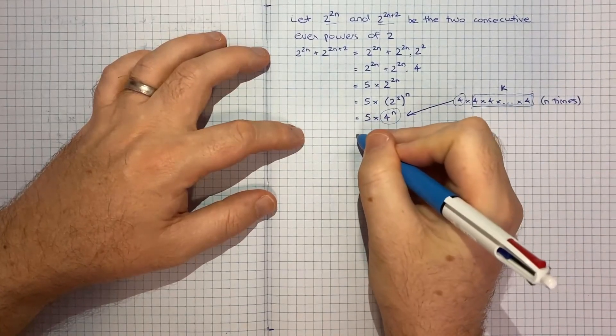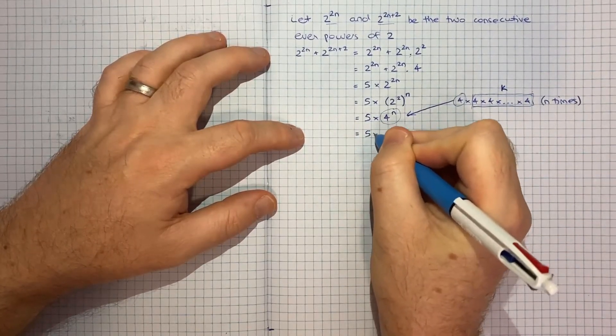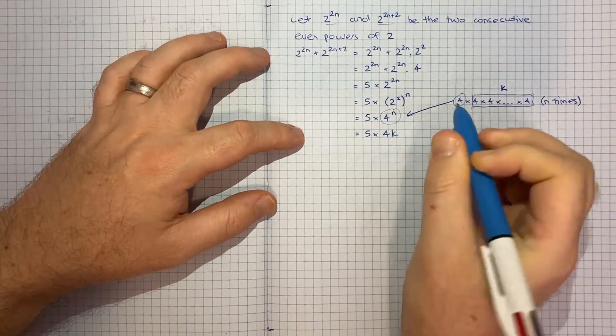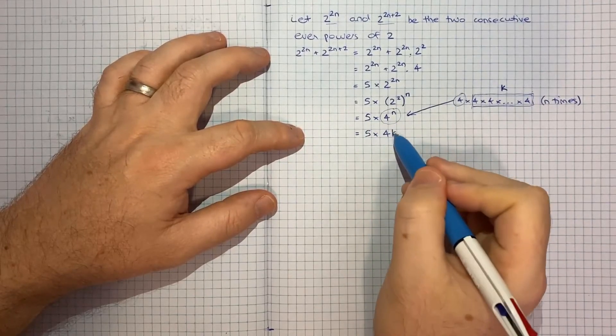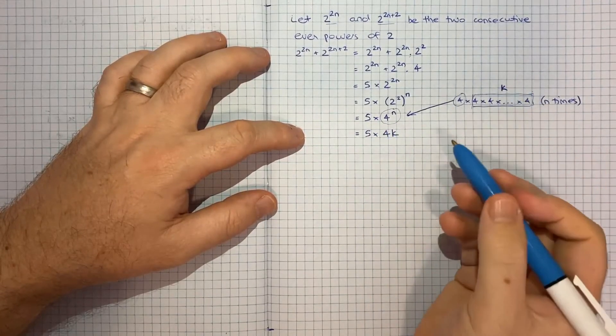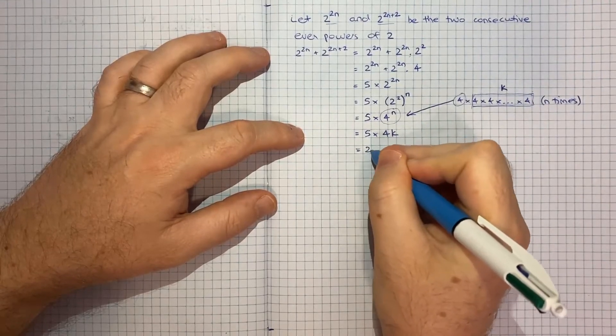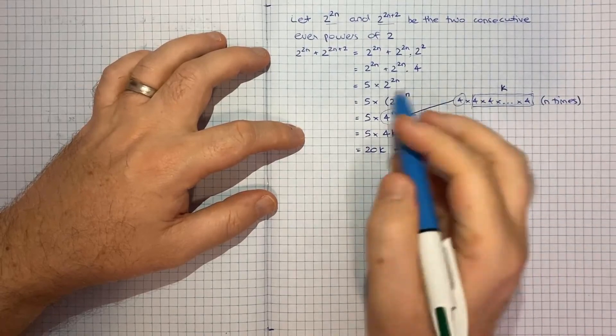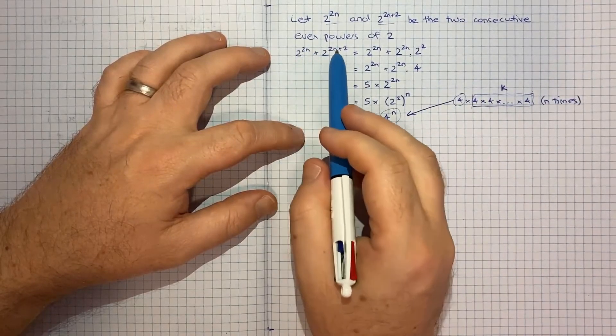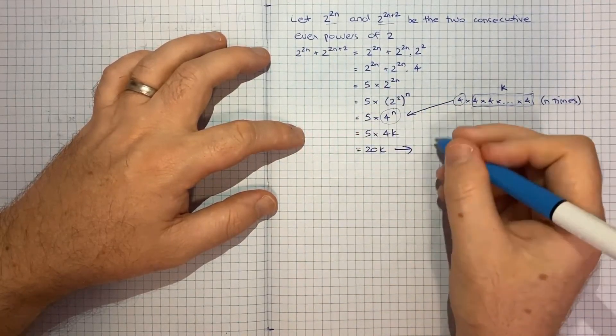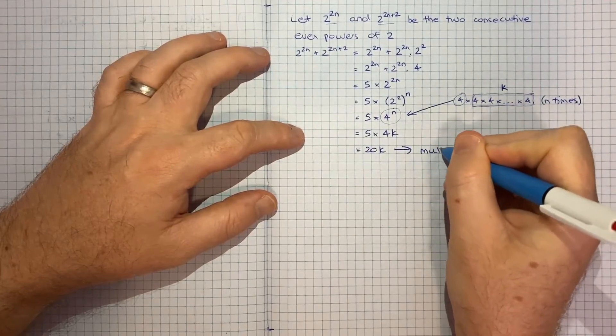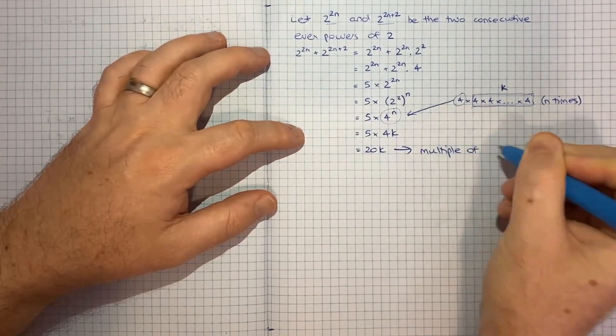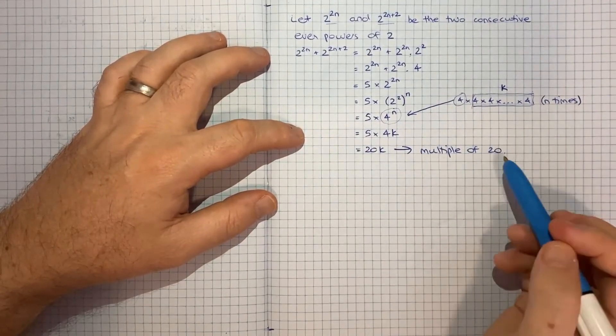So you get 5 times 4k. You can write 4 to the n as 4 times some number k. So that's going to be 20k, which means the sum of these two consecutive even powers of 2 is a multiple of 20. And that's what the question was asking us to show.